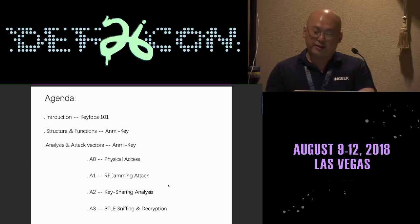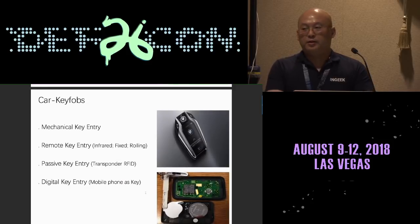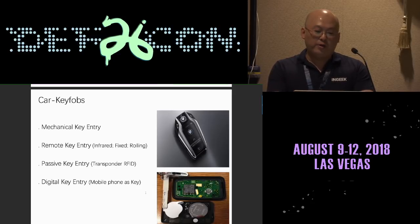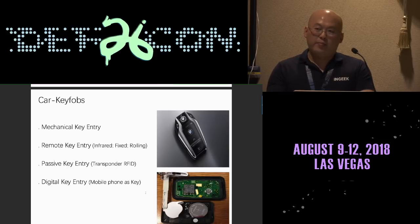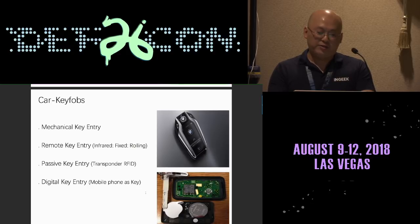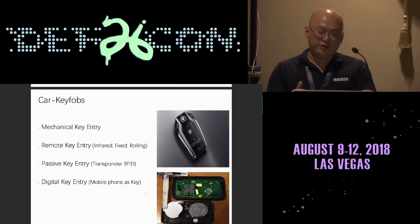The car key fob is one of the most common items we can find in our pocket. In a very early age, car keys only relied on a mechanical key. Then they implemented some kind of remote key entry — starting with infrared, then moving on to RF fixed code, then rolling code. In order to add authentication they also implemented an RFID chip inside your car keys.